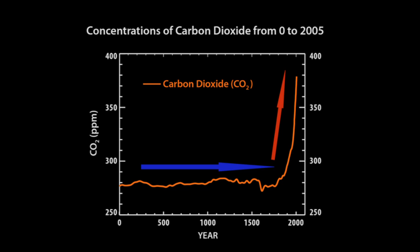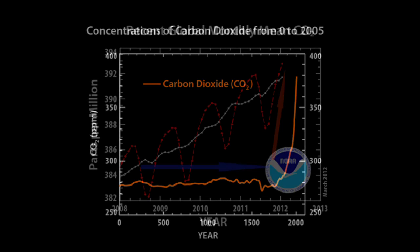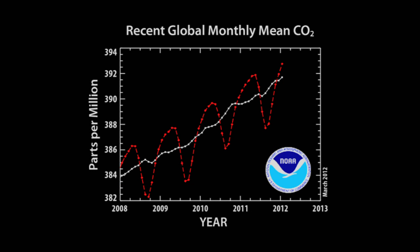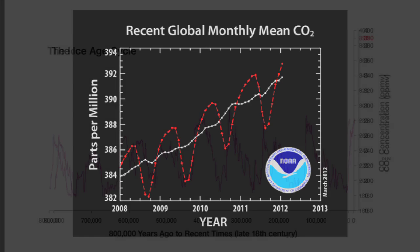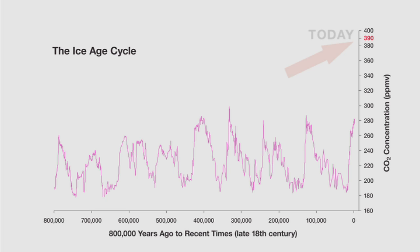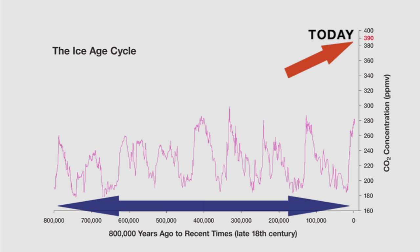Today, atmospheric CO2 concentration exceeds 390 parts per million, around 40% higher than pre-industrial levels, and according to ice core data, higher than any point in the past 800,000 years.